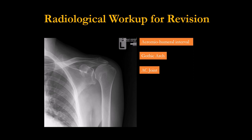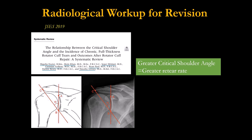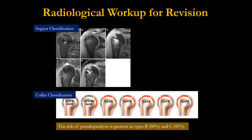Diagnosing post-op failure is straightforward on X-ray — you can see proximal migration, narrowed acromiohumeral interval, or loss of the coracoacromial arc. You can also use ultrasound or MRI to detect failure. Studies show that a higher critical shoulder angle is associated with a higher chance of cuff tear or cuff re-tear.